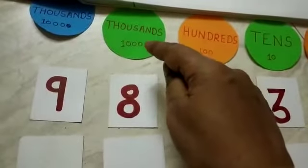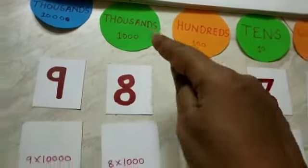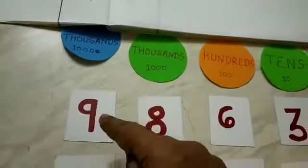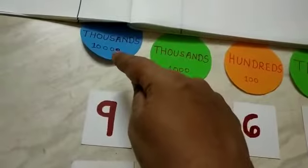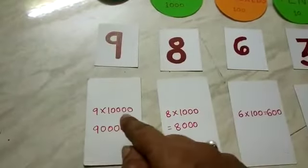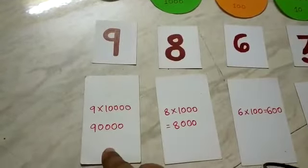8 is in thousands house, so value of this house is 1000, so 8 multiplied by 1000 is 8000. 9 is in ten thousands house, so value of this house is 10,000, it means 9 multiplied by 10,000 gives you 90,000.